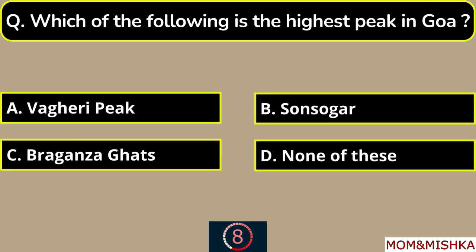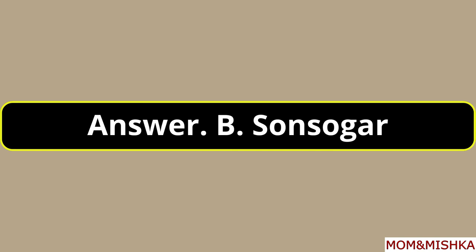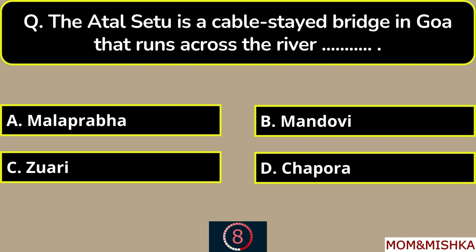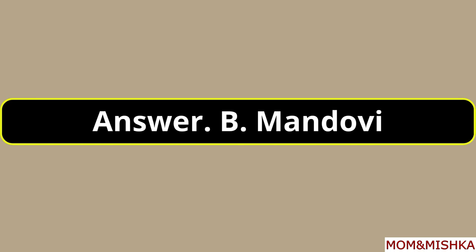Which of the following is the highest peak in Goa? It's Sonsogor, option B. The Atal Setu is a cable-stayed bridge in Goa that runs across the river blank — across Mandovi river, option B.